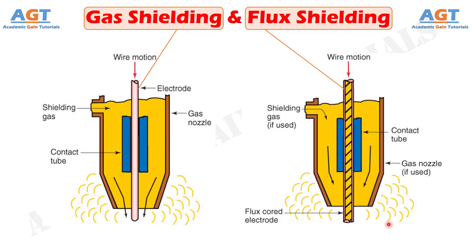To prevent direct contact of atmospheric air with the melted and heated regions of the joint, a protective layer of inert gases is usually created surrounding the arc. This thick layer of inert gas acts as a shield or barrier between the weld pool and atmospheric air during the progression of welding. There are two conventional ways of creating such a barrier around the arc: either through shielding gas or through flux. Both shielding gas and flux are essential elements of arc welding.